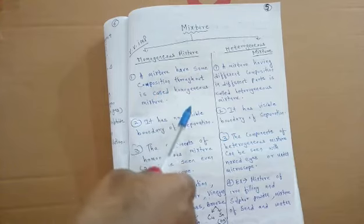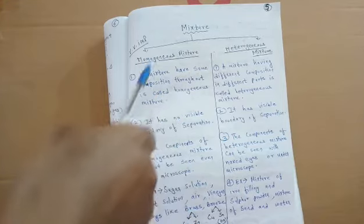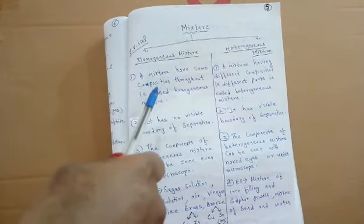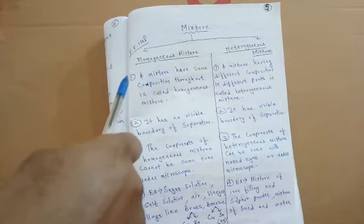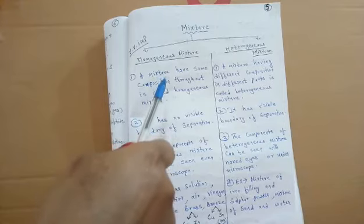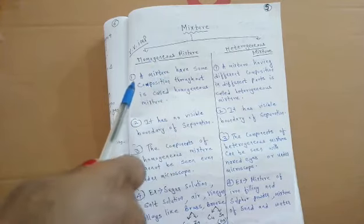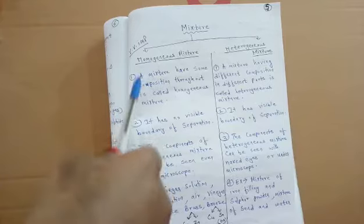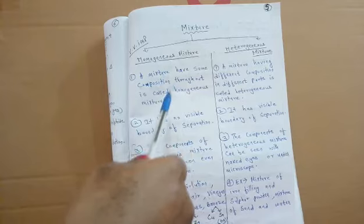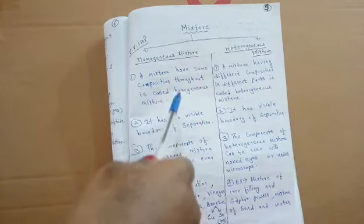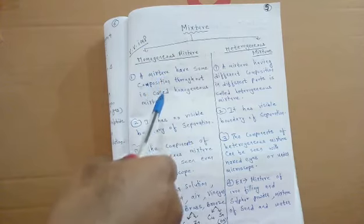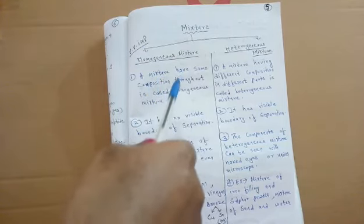In salt solution, the saltiness is the same throughout and you cannot see salt particles separately in water. So salt solution is an example of a homogeneous mixture. Second, sugar solution — when sugar is completely dissolved in water, the composition becomes the same throughout, making it another example of a homogeneous mixture.